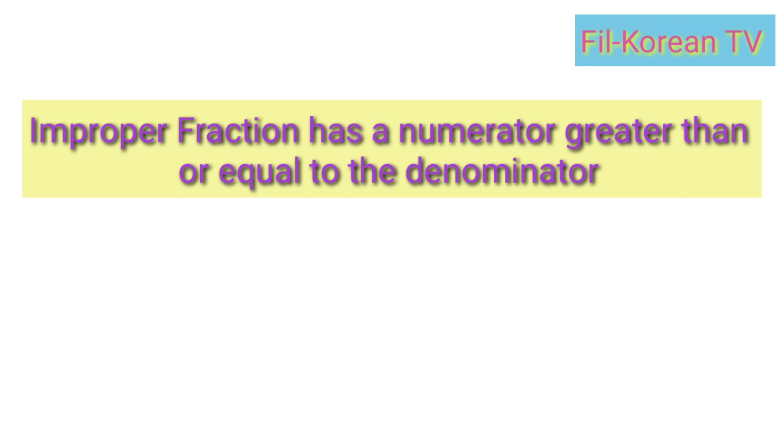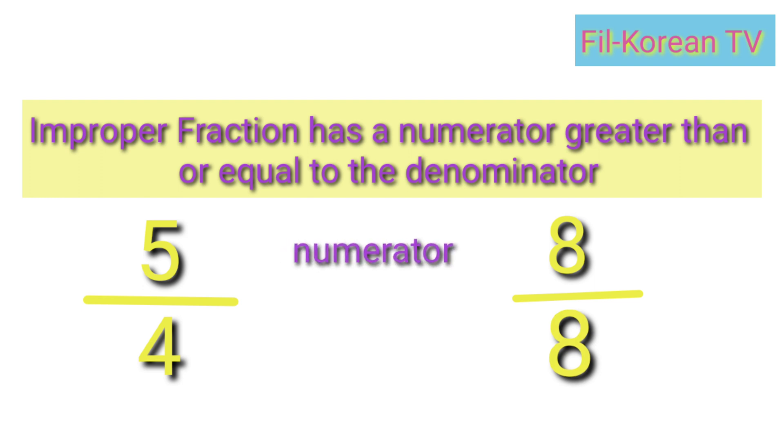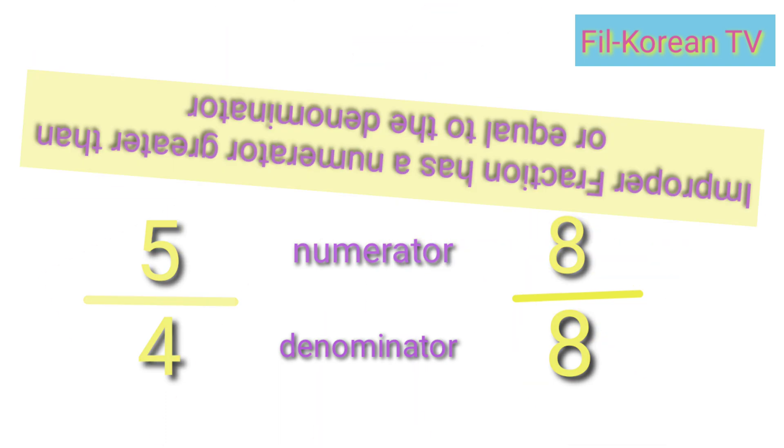Improper fraction has a numerator greater than or equal to the denominator. Examples: five-fourths and eight-eighths. The numerator five is greater than the denominator four, and the numerator eight is equal to the denominator eight.